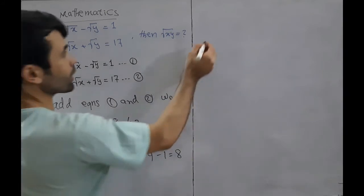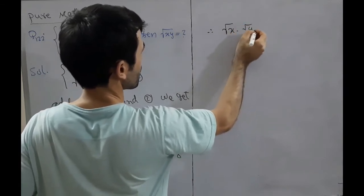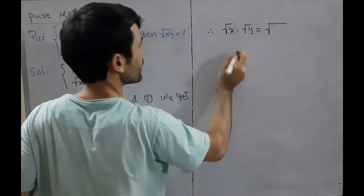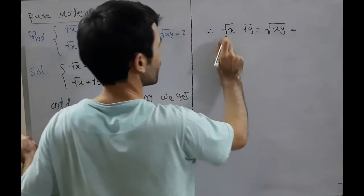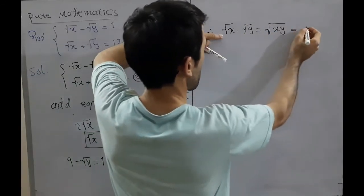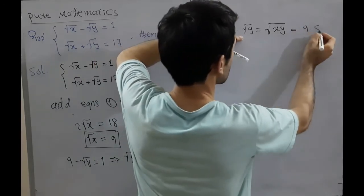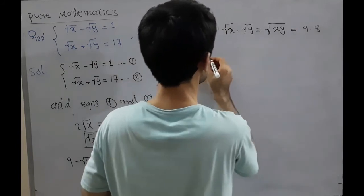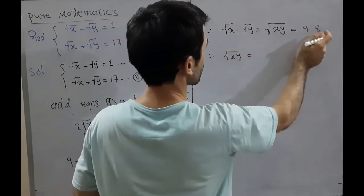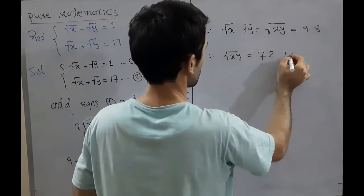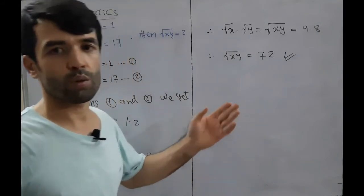Therefore, square root of x multiplied by square root of y equals square root of x times square root of y. Instead of square root of x we have 9, and instead of square root of y we have 8. Therefore square root of x times square root of y equals 9 multiplied by 8, which equals 72. This is the value of square root of x into square root of y.